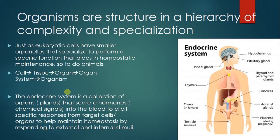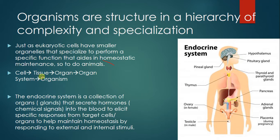Organisms are structured in a hierarchy of complexity. Just like eukaryotic cells have organelles that each perform a special function, animal bodies are grouped in a hierarchical nature with smaller and more specialized components. At the organism level, there are organ systems like the digestive, circulatory, and respiratory. Inside organ systems like the respiratory system, there are organs like the lungs serving specific functions such as gas exchange. Inside those are alveolar tissues, and then the most specialized individual cells.